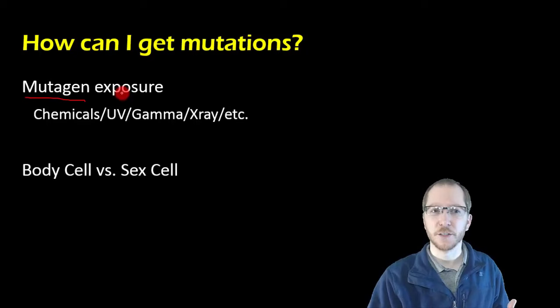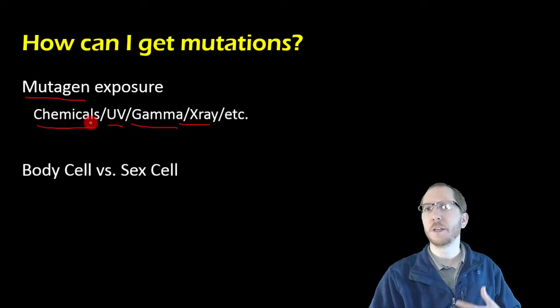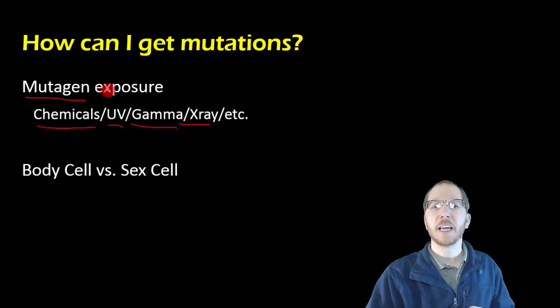This is basically another term you could say for carcinogens. So a lot of the same things that were carcinogens are also going to be mutagens. So UV light, gamma or x-ray radiation, there's a variety of chemicals that you're going to be exposed to that, once again, we'd normally also call carcinogens, whether it's from smoking, etc.